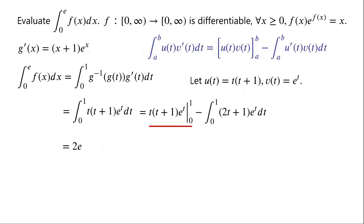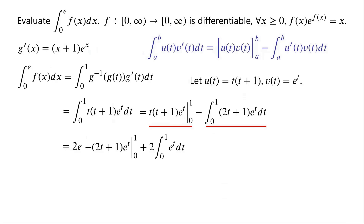Again we use integration by parts to evaluate the integral from 0 to 1 of (2t+1)·e^t dt. Let u(t) equal 2t+1 and v(t) equal e to the power of t. Then u'(t) equals 2 and v'(t) equals e to the power of t. So the negative of that integral equals negative (2t+1)·e^t evaluated from 0 to 1, plus 2 times the integral from 0 to 1 of e^t dt. Now (2t+1)·e^t from 0 to 1 equals 3e minus 1.